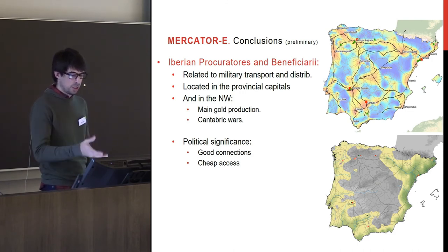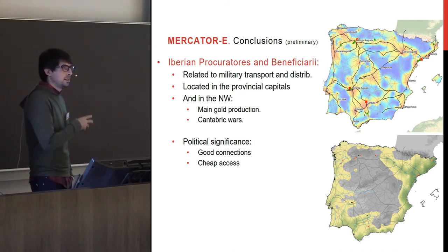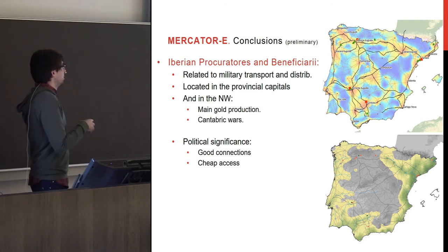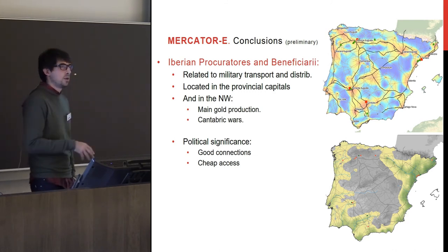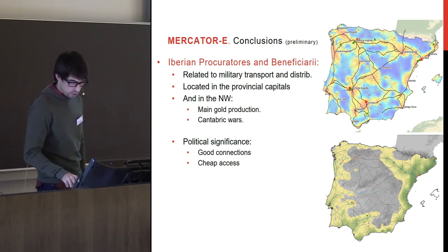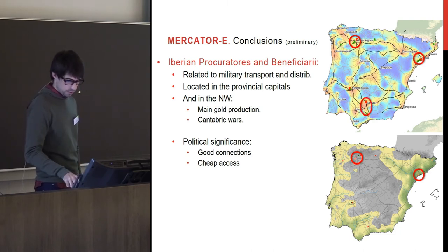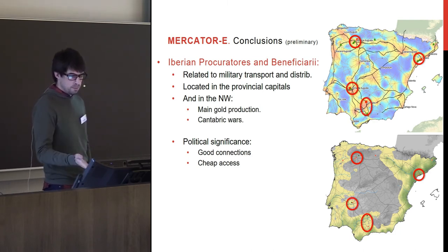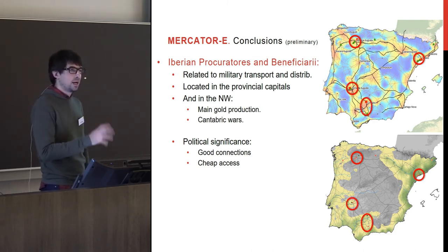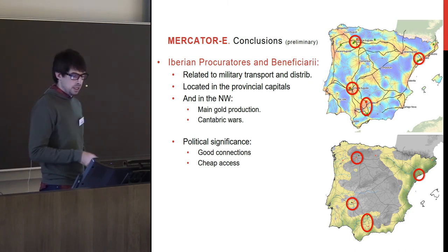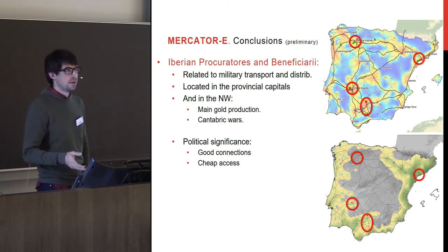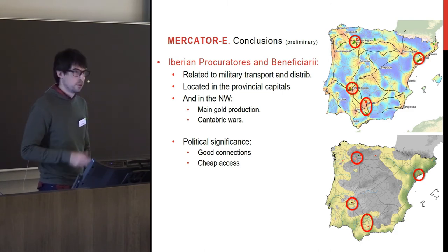Another interesting point is the location of procuratores and beneficiarii — people related with transport and the supply of armies. Most of them are always located in the provincial capitals, but we also have some in the north and in places that seem to have other reasons for their placement — something I have not fully addressed yet but need to think about.